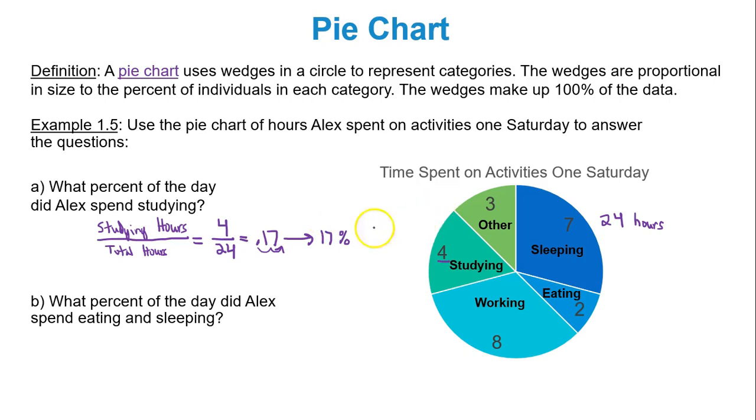Well studying is important but to me what's more important would be eating and sleeping. Who has time for that sometimes right? What percent of the day did Alex spend eating and sleeping? Well out of 24 hours how many hours did Alex spend eating and sleeping? Well eating was 2, sleeping was 7. Not bad Alex. That's 9 out of 24. Divide. When you divide those two, 9 over 24 is actually going to give you 0.375 which remember to turn this into a percentage. Move the decimal to the right two spots and you get 37.5%. That is what percent of the day Alex spent eating and sleeping.